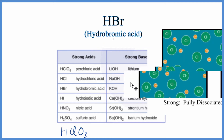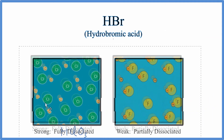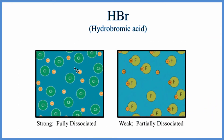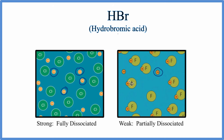What it means when we say it's a strong acid is that when we put it in water it'll fully dissociate. So all the hydrogens and all the bromine ions in HBr — they're dissociated completely, they're all broken apart. In a weak acid like hydrofluoric acid, some of them have broken apart but most of them are still bonded together and not dissociated.